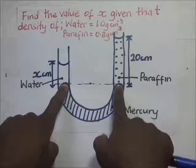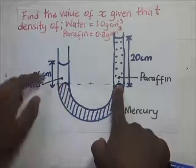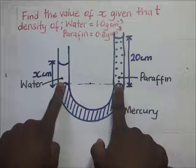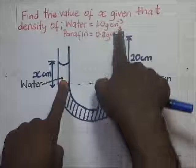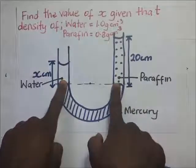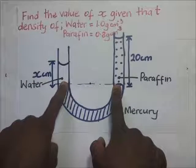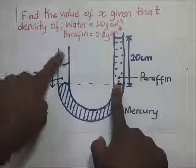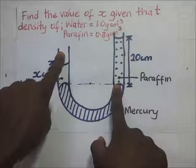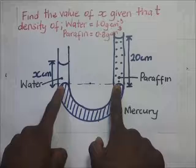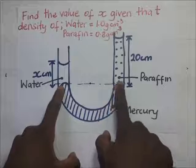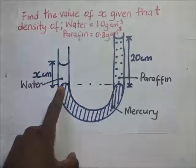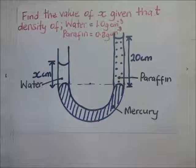It follows that the pressure on this side equals the pressure on the other side. The pressure on this side is the pressure exerted by the column of water plus atmospheric pressure H, and that equals the pressure of the column on the other side plus atmospheric pressure H.